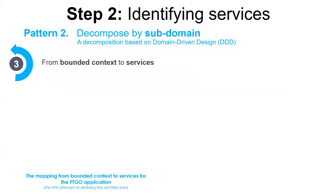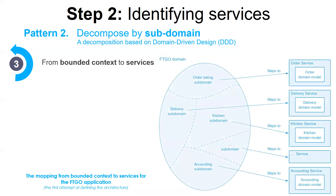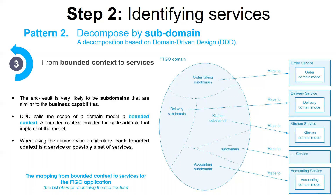The examples of subdomains in the food-to-go application include order taking, order management, kitchen management, delivery, financials, and so on. As you can see, these subdomains are very similar to the business capabilities described in the previous video. DDD calls the scope of a domain model a bounded context. When using the microservice architecture, each bounded context is a service or possibly a set of services. We can create a microservice architecture by applying DDD and defining a service for each subdomain.